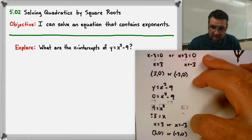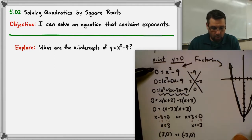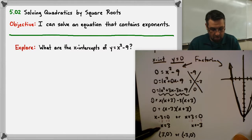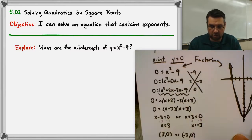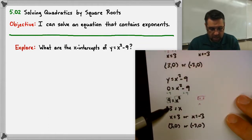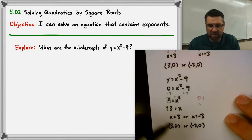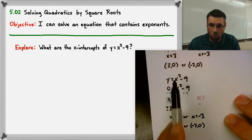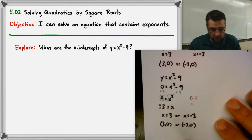The results are the same, but look at the amount of work — factoring took seven lines plus the X-diagram and heavier thinking, whereas the square root method only took three lines. This method is much more efficient, but it only works when we have one type of variable: either just x or just x squared.